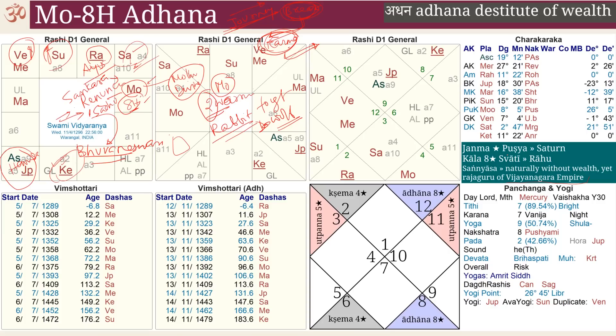Now let us go into the position of the Moon in the 8th house. When the Moon is in the 8th house it is called Adhana — not Adhana. In Sanskrit, Adhana means destitute of wealth, poverty — a reversal of Dhana. Dhana is the second house; the eighth house is Adhana, not Adhana. So the first quality we see of this Moon is that some poverty will be there — in some way poverty will hit you. The remedy is to make the Moon strong, especially the lord of the Moon sign.